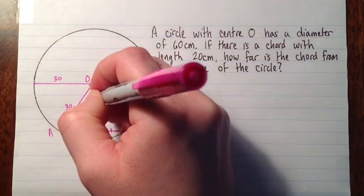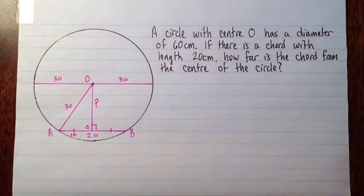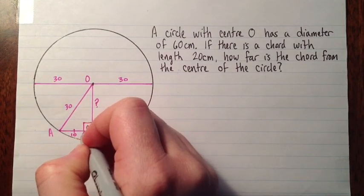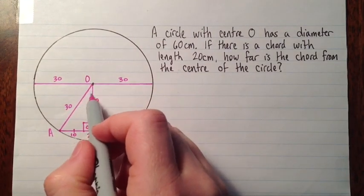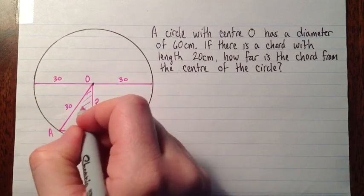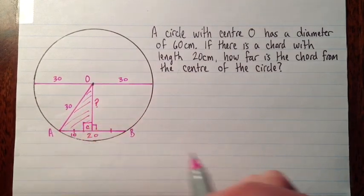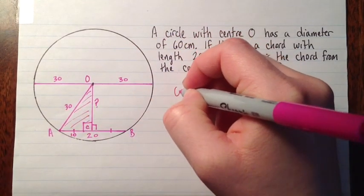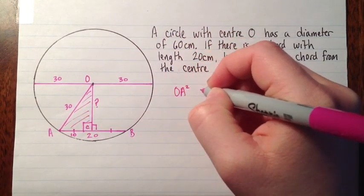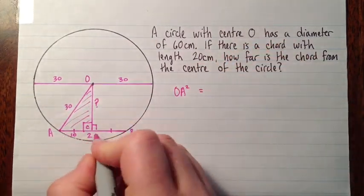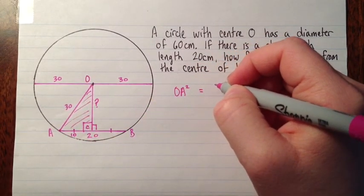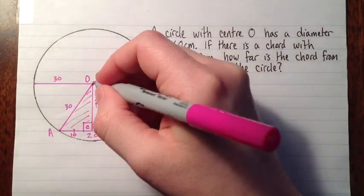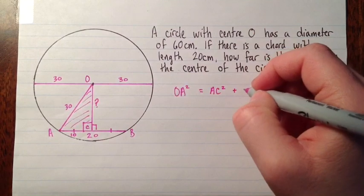And how far is the chord from the center of the circle? That's what we want to find out. So now we're good here. We've got a right triangle in here. We can just use Pythagorean Theorem on triangle OAC. So we'll have OA squared, that's the hypotenuse, equals AC squared plus OC squared.